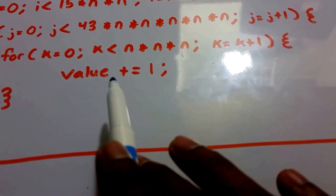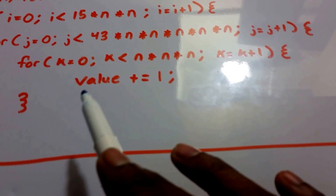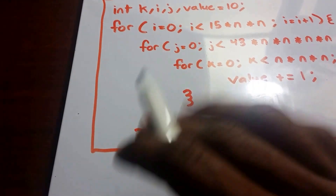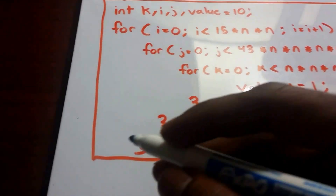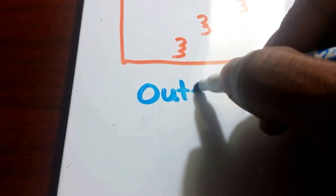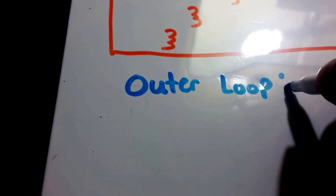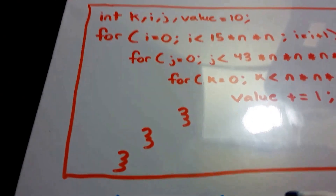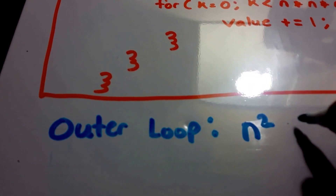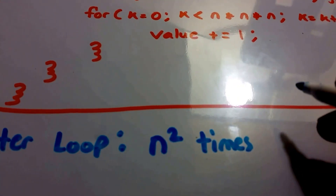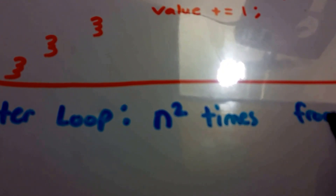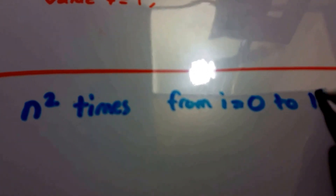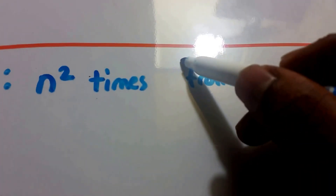And then finally, we have our value which increments by 1 each time that loop is run. So let's go ahead and get started. We're going to analyze this code fragment, and we're going to first look at our outer loop. The outer loop iterates 15 times n times n times — so that's n squared times. And that's from i equals 0 to 14n squared.